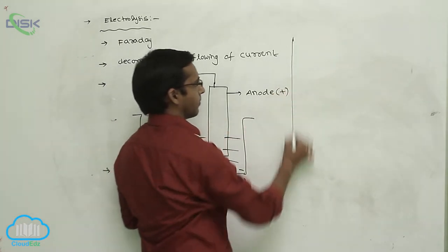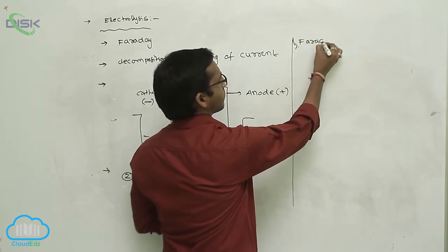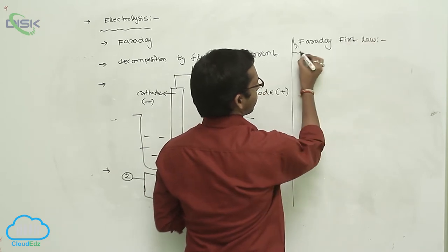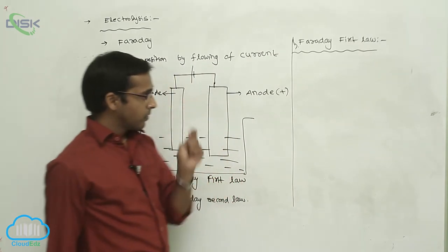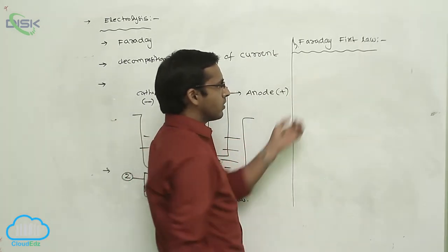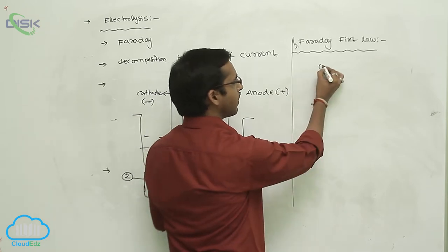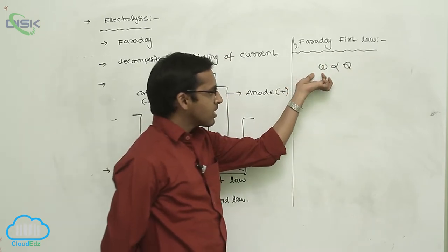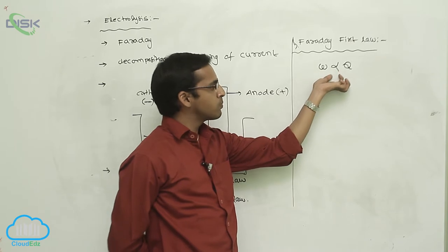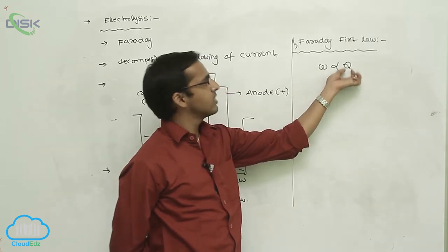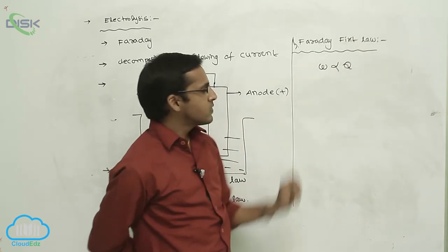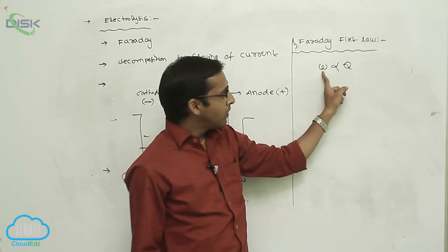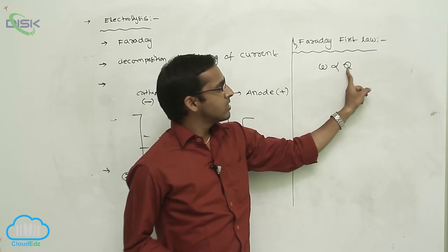Faraday's First Law states that the weight of a chemical substance liberated is directly proportional to the quantity of electricity. That is, the weight of chemical substance produced is proportional to the quantity of electricity. Mathematically, W is proportional to Q, where W means weight of chemical substance and Q means quantity of electricity.